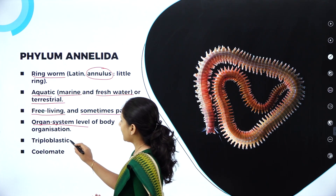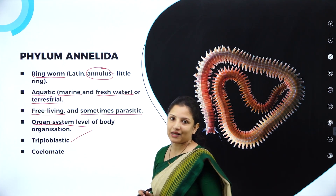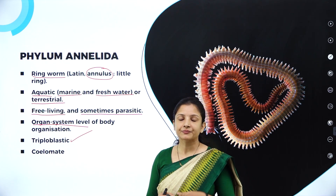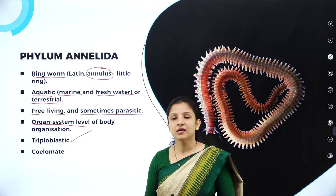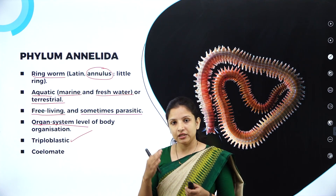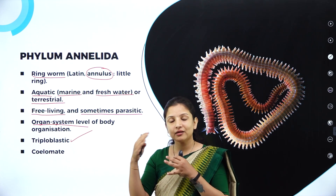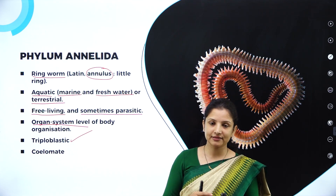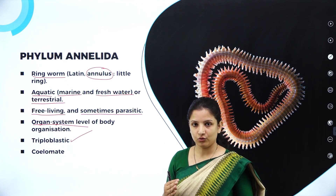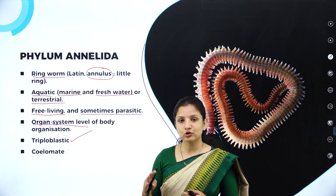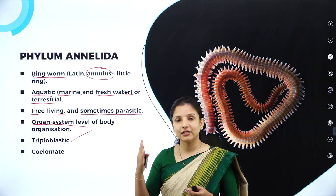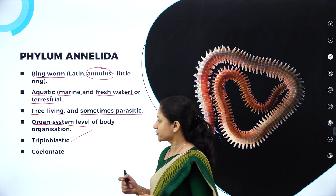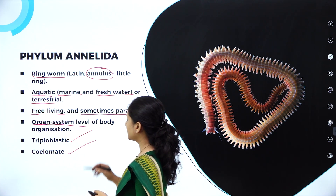Their arrangement of cells is triploblastic, wherein the cells are arranged in three embryonic layers — an outer ectoderm and an inner endoderm, and between the ectoderm and endoderm there is one more layer called the mesoderm. Meso means middle, ecto means outside, endo means inside. So it is a triploblastic cell arrangement.